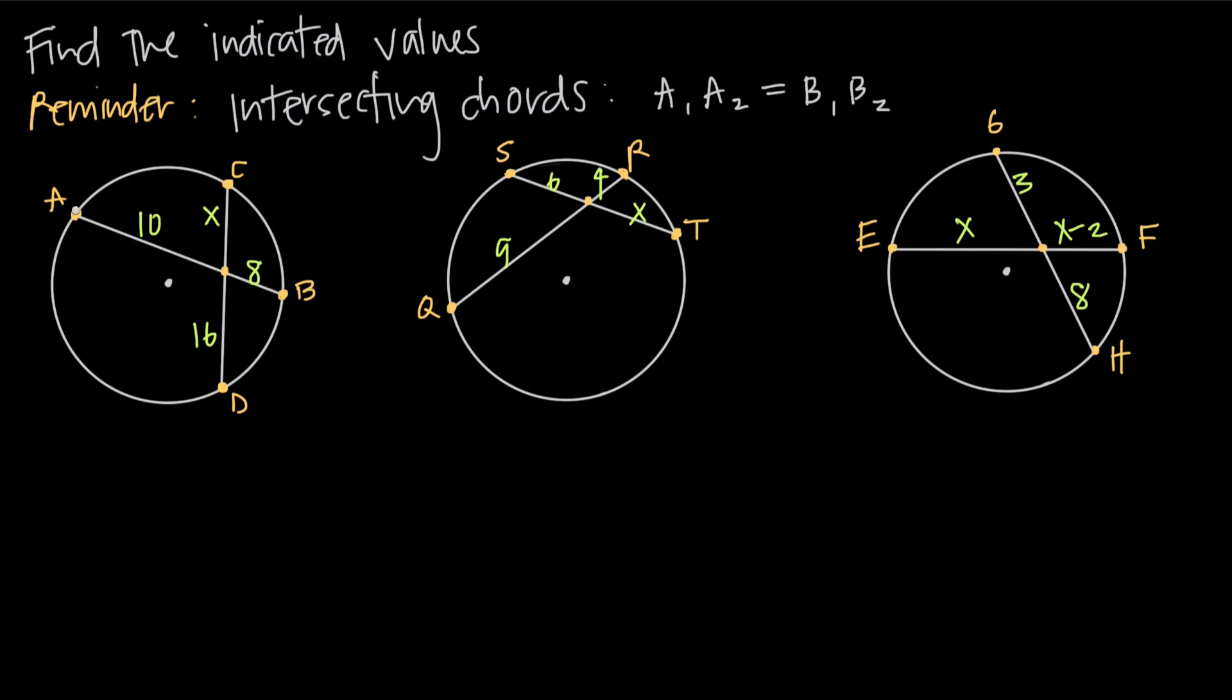So for example this line segment here, line segment AB, is a chord because it's just a line segment inside the circle with each endpoint, endpoint A and endpoint B, on the edge of the circle. So we have chord AB and we have chord CD, and they intersect each other at this point here in the middle.